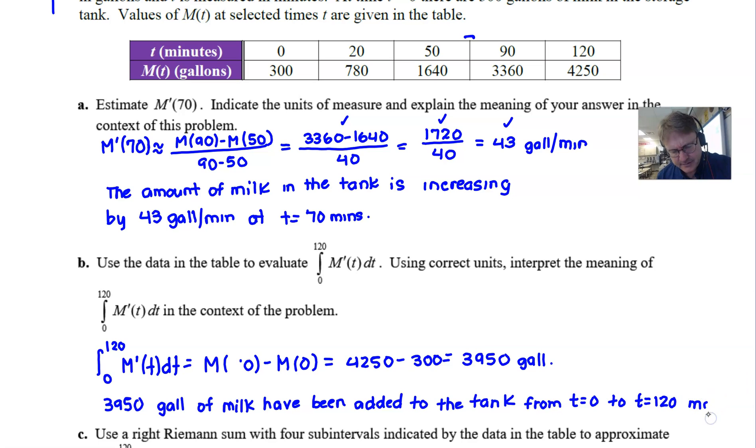And so we're going to have to make sure that we indicate that by saying from t equals 0 to t equals 120 minutes. If you said during those two hours that probably would be okay. I always like to reference exactly what the t values are in the table and I think that's going to take care of it and that's going to give us probably a couple of points there for part b.